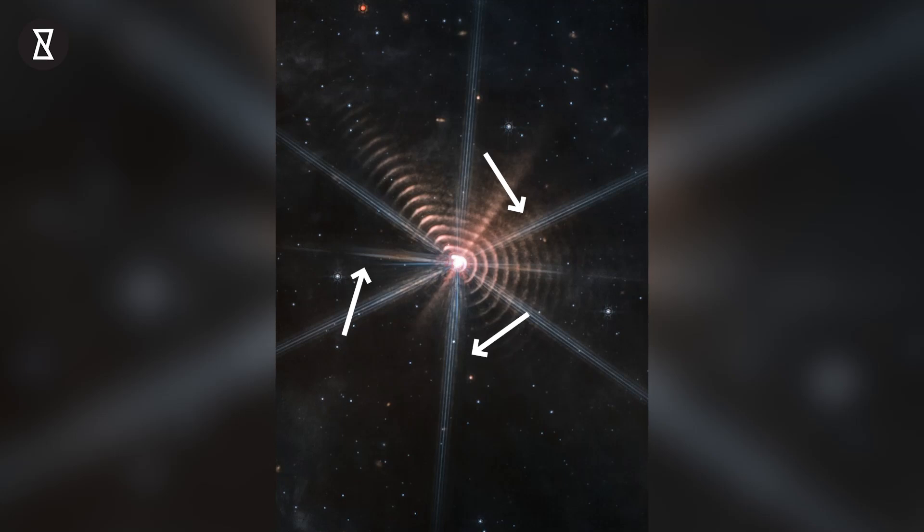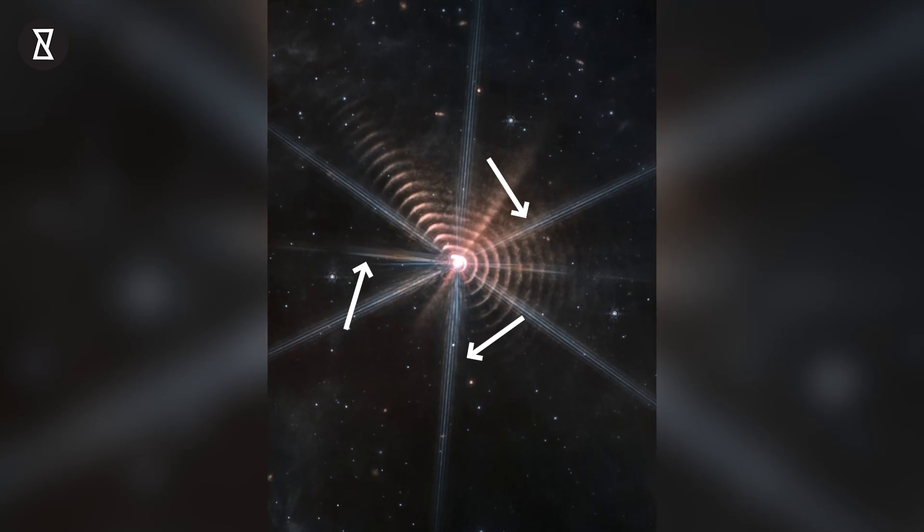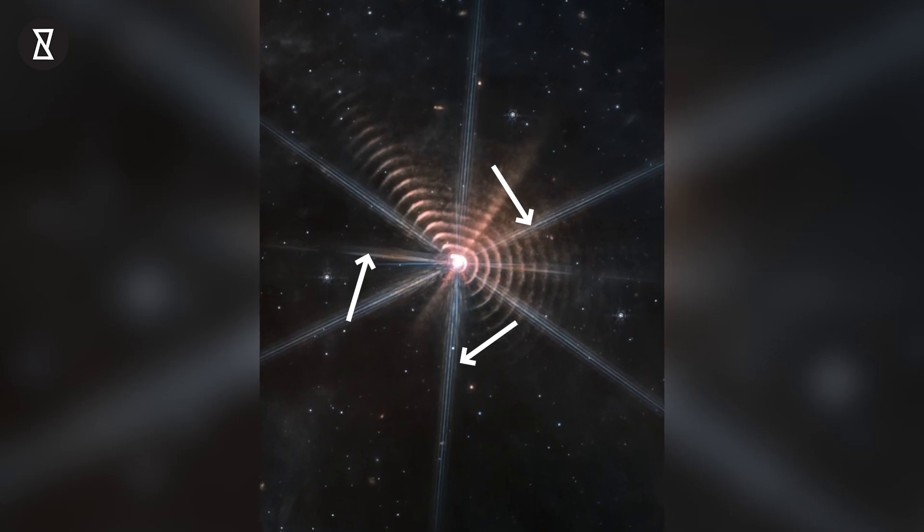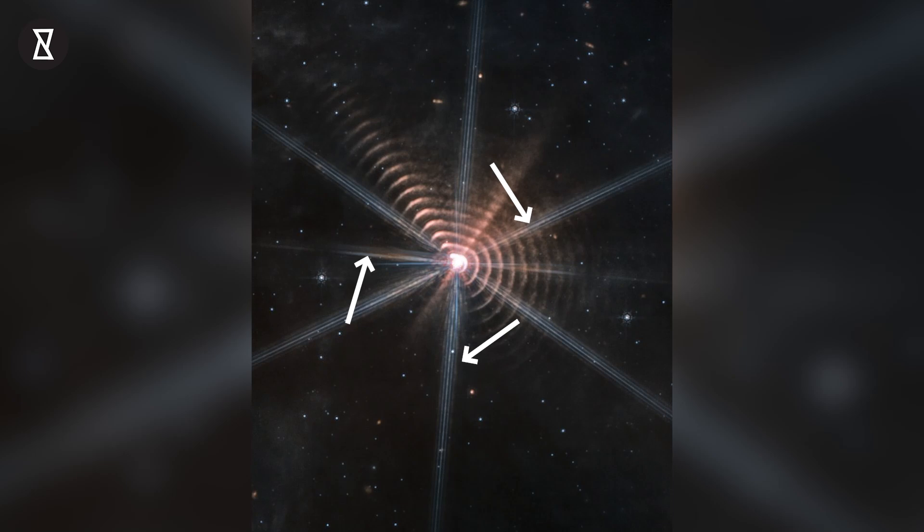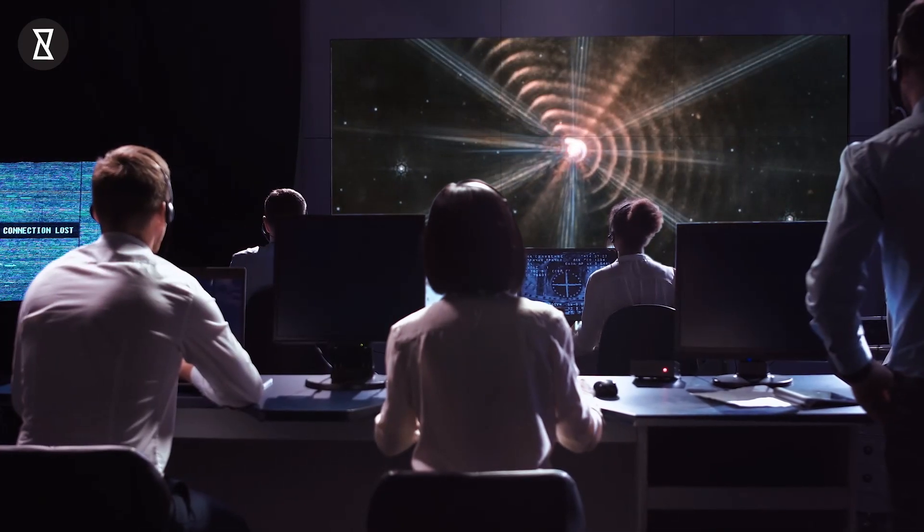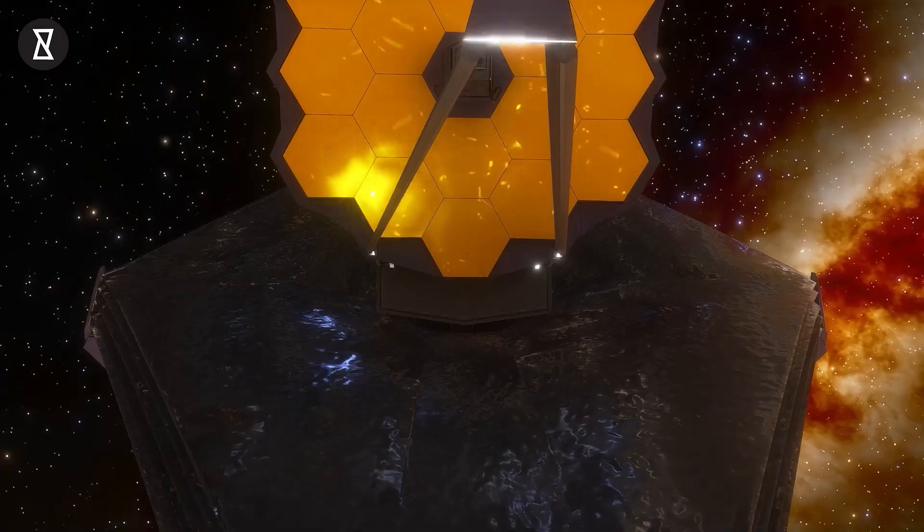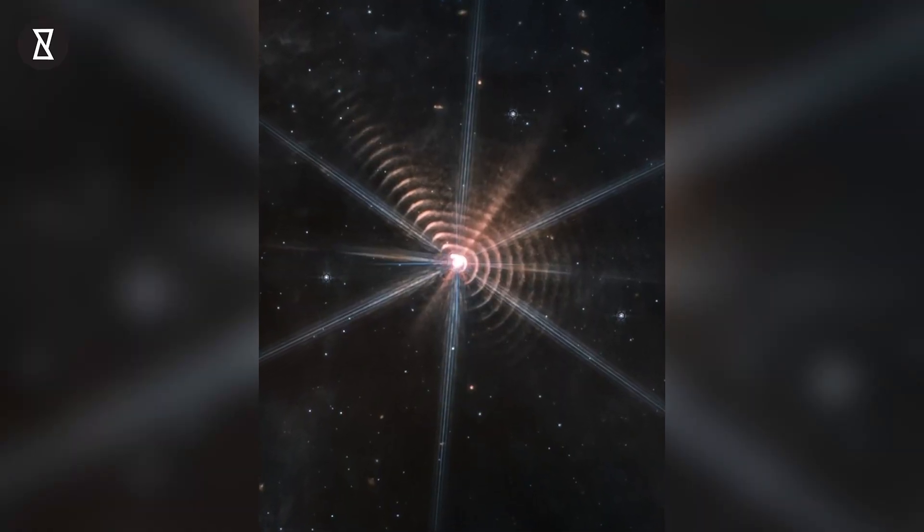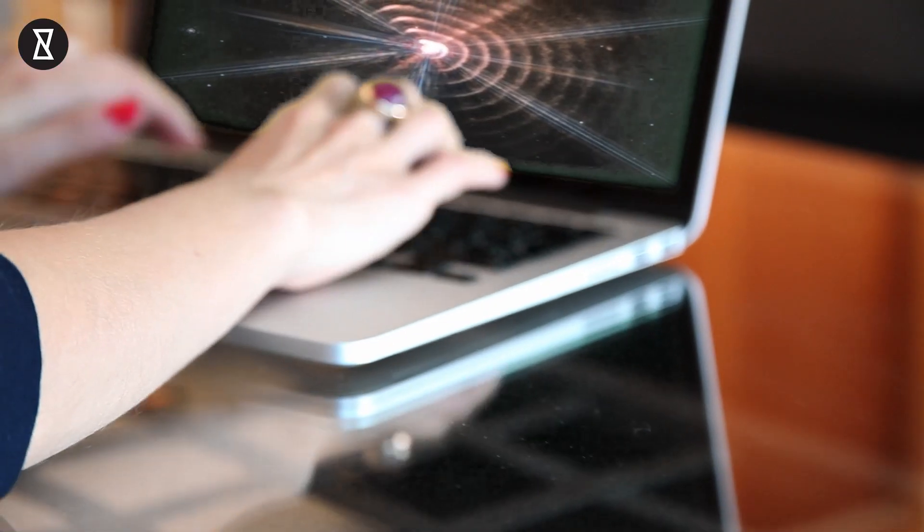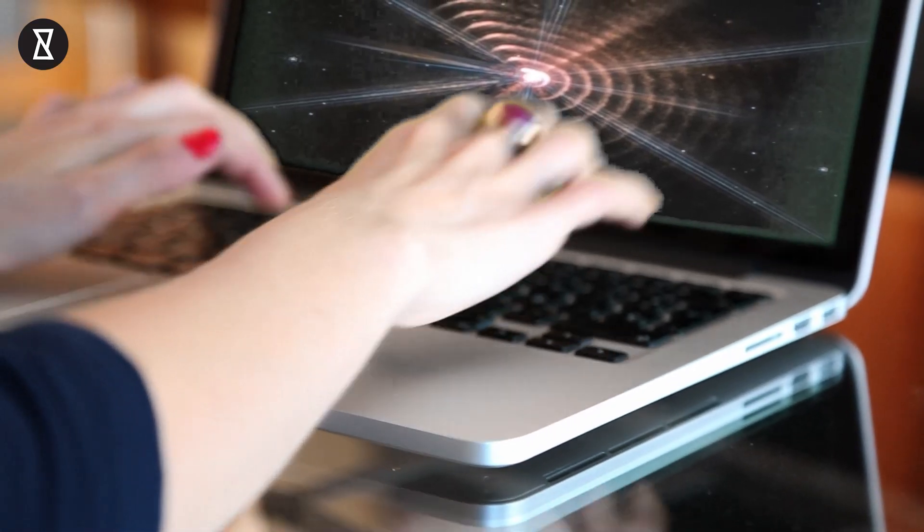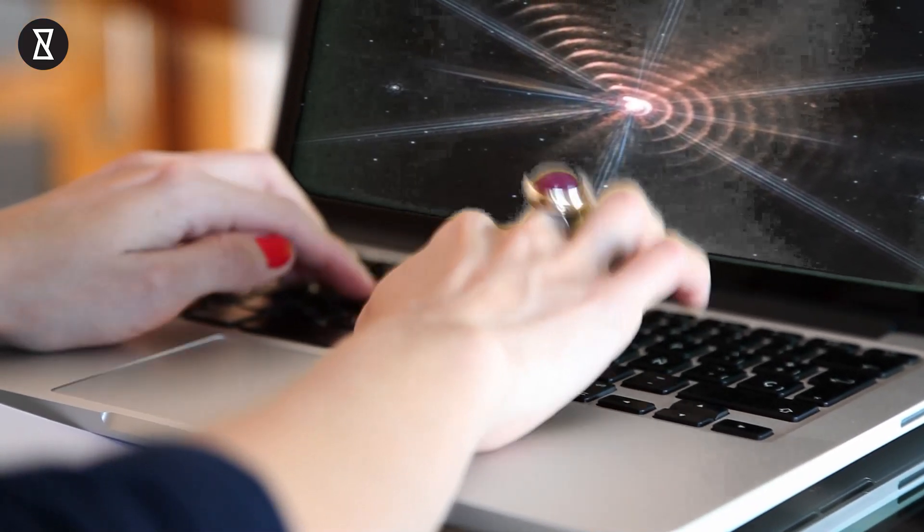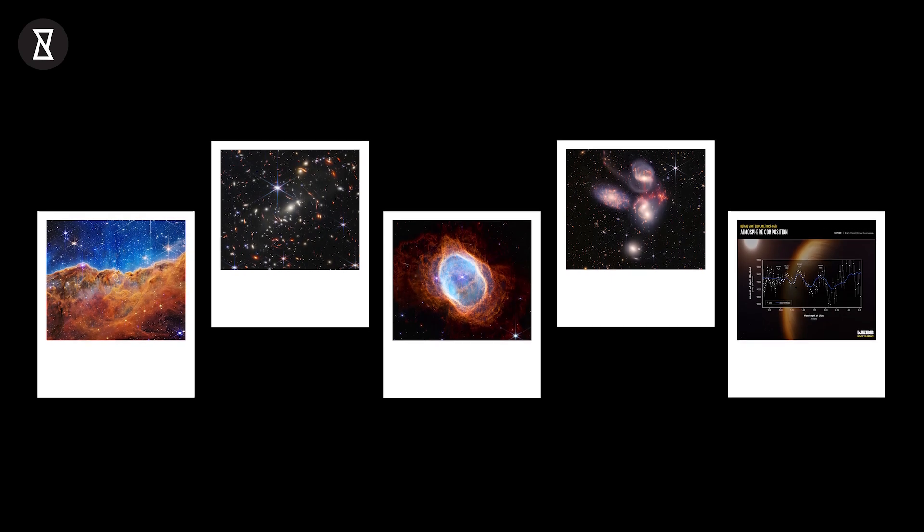The star is also seen with six major spikes around it, which are called diffraction spikes, created by the telescope itself. This image has NASA so curious that astronomers will carry out follow-up studies to gather more details about the contents around the star in the picture. The picture was shared by citizen scientist Judy Schmidt, who works on the processing of images clicked by observatories and has contributed to the development of several Webb images.